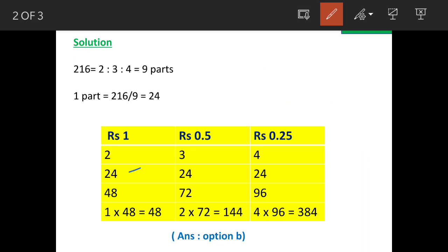1 part is 24. So 1 rupee note will be how many? 24 into 2 equals 48, and number of notes will be—in 48 rupees they are going to be total 48 one-rupee notes.